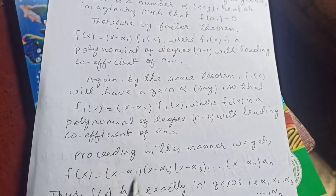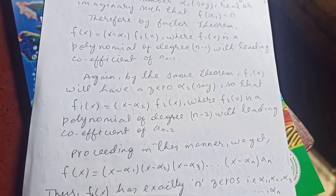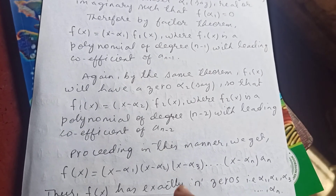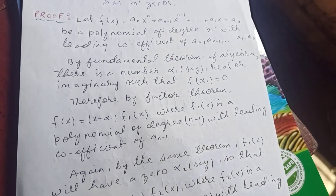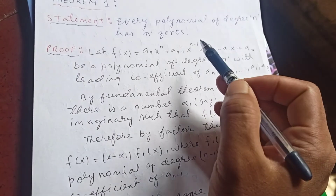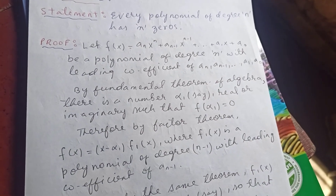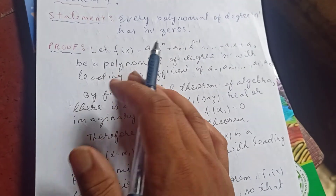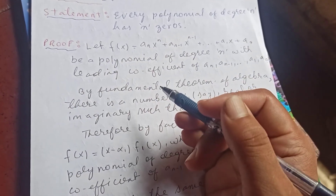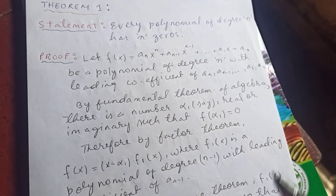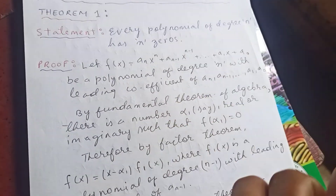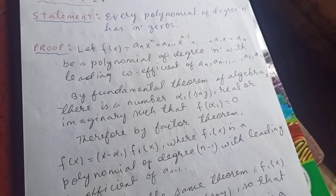Thus, from this we see that f(x) has exactly n zeros: α₁, α₂, ..., αₙ. So we have proved that every polynomial of degree n has n zeros. You can also verify this with an example — take a quadratic, find its roots, substitute them back into the polynomial, and you will get zero. So a polynomial of degree 1 has one zero, degree 2 has two zeros, and so on up to degree n.